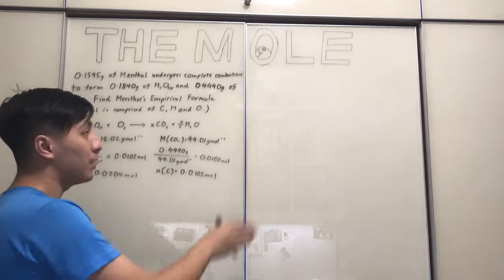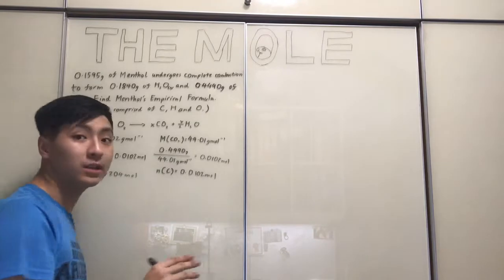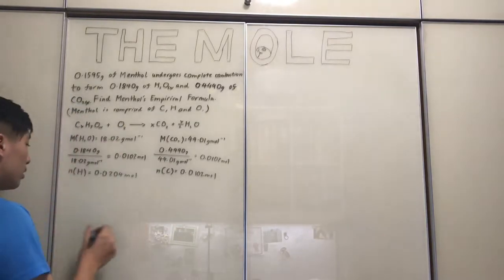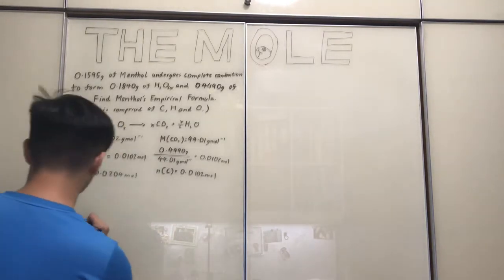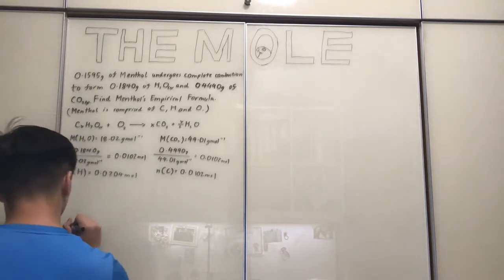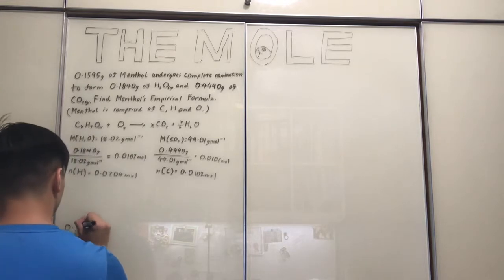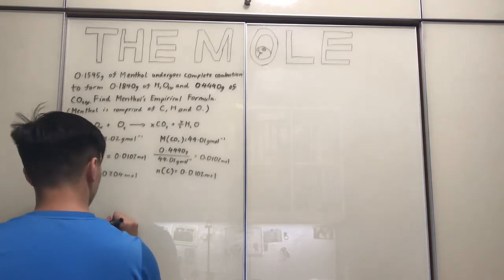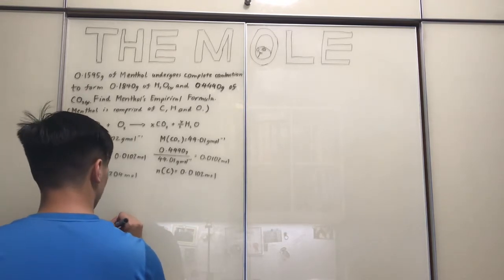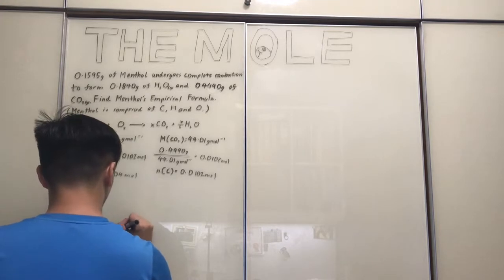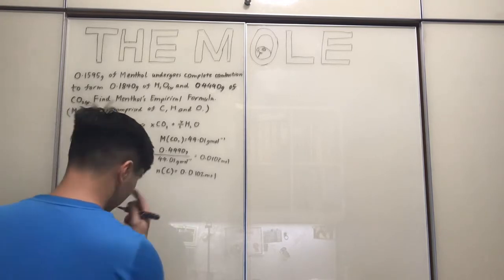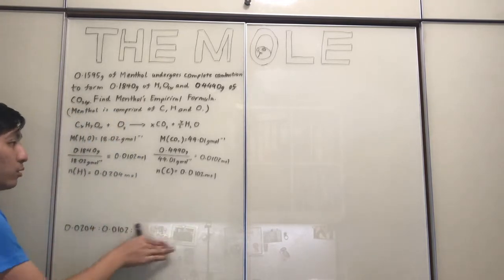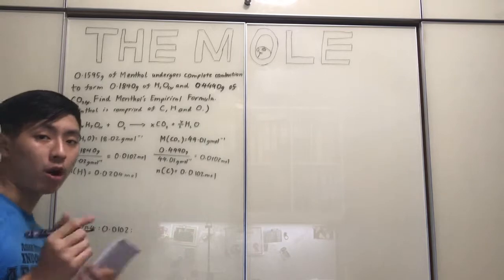So we've determined the number of moles of hydrogen and the number of moles of carbon, and now we can begin to construct our ratio. The ratio here would be hydrogen to carbon to oxygen: 0.0204 to [carbon value] to the oxygen value still to be determined.